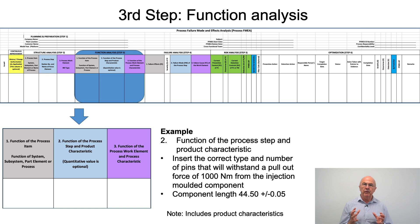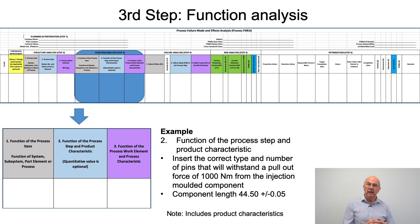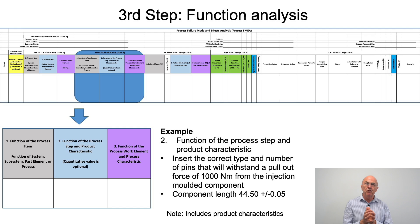The second box to complete in step three is the function of the process step and the product characteristics. We are focusing on the injection molding process step, operation 60. We are trying to insert the correct number and correct type of pins into the injection molded component so they will withstand a pullout force of 1000 newton meters. There is also a critical dimension — a specific component length that is referenced. These are examples of the functional requirements we are trying to achieve, which tend to focus on product characteristics that could come from the customer drawing.